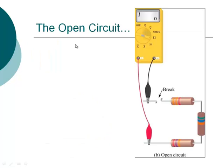Conversely, we have an open circuit. If for whatever reason we had a break in the wire, the values we previously measured of 2 kilohms for the total series resistance would become infinity. In MultiSIM, if you read infinity, it's typically shown as three dashes across the meter.